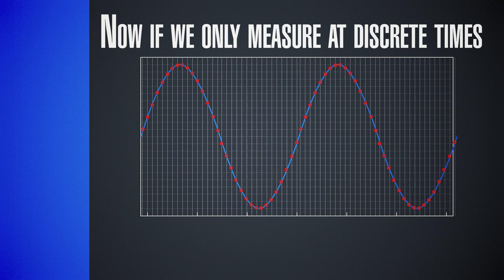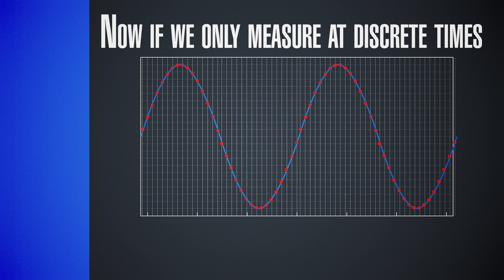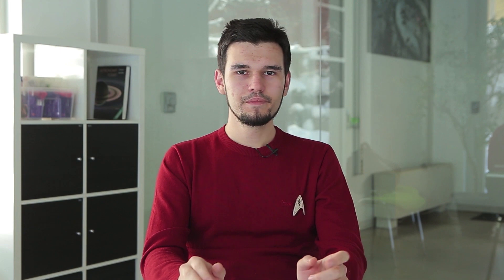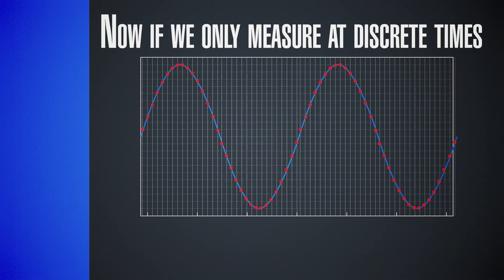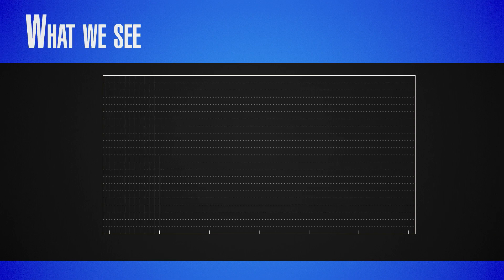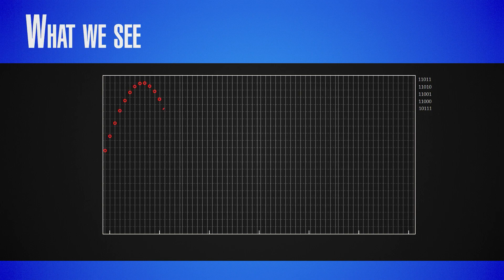What we get are these red dots indicated here — we only get values at the sampling times. Think of it as the sine wave flowing and our device measuring at every 0.2 seconds, measuring the values which are the red points. Our machine gets a set of values — it doesn't have the full sine function, only a set of points. It knows they're evenly spaced in time, for example at 0.2 seconds, and it knows what the value was at each of those times.